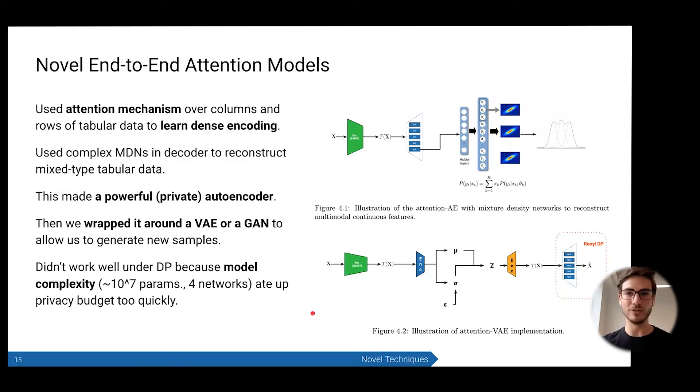Now we get to the real meat of this. The first way to address this is, what if we could get around the challenge of tabular data and just represent it with an end-to-end model that really understands tabular data? I've extended some research on doing this in the supervised setting where you use attention mechanisms over the columns and rows of the tabular data and you learn this really nice dense encoding. That's great, but the problem is that you still have to deconstruct that back to the tabular data. I ended up engineering this complicated mixture density network system in the decoder and using all these tricks to try and reconstruct the tabular data. Overall, it kind of worked. What you got is an autoencoder for tabular data that you could train privately and it was pretty good. But you can't sample from that, so you have to wrap that around a VAE or a GAN to generate new samples. And this just didn't work. The complexity of the model ate the privacy budget up too quickly. For this context, it doesn't really work. Bit of a dead end.